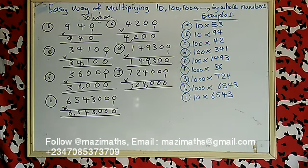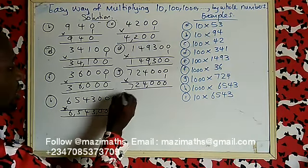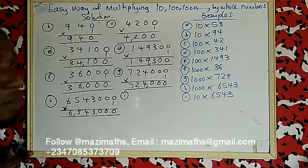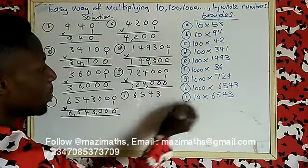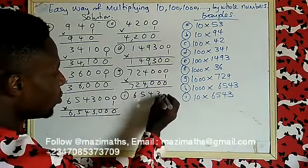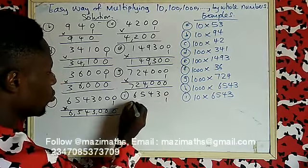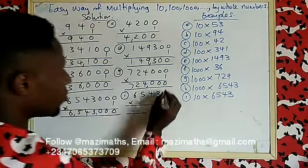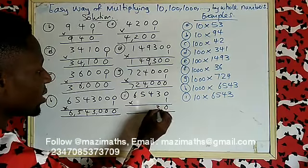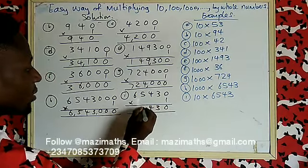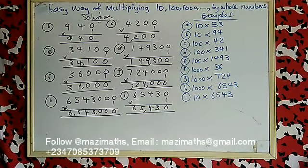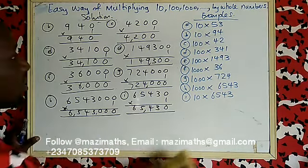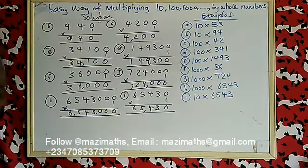Example I: 6543 multiplied by 10. How many zeros in 10? One — put one zero. Then: one times three is three, one times four is four, one times five is five, one times six is six. Your answer is 65430.